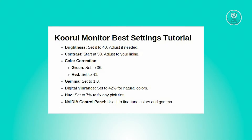First is going to be the brightness and contrast. Brightness controls how light or dark the image appears. To revert it to a default setting, access the monitor's on-screen menu — this is usually done by pressing a button on the monitor itself. Then navigate to brightness settings and set it to the default value, which is typically around 50. If you're unsure, check your monitor's menu or settings guide for the exact value.